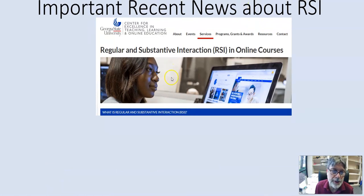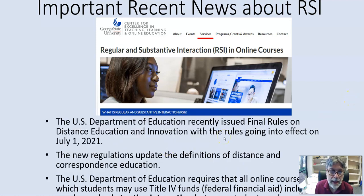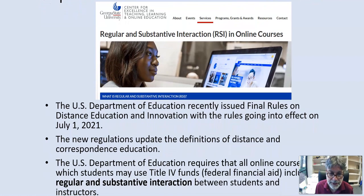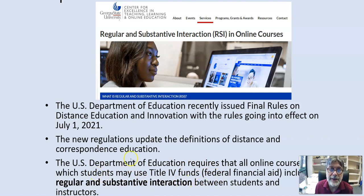What has happened more recently is what we should be concerned about. This is Georgia State University's policy they've just put up on RSI. The Department of Education has issued some final rules that define new definitions of what determines if you are having regular and substantive interaction. The U.S. Department of Education requires that all online courses for which students may use Title IV funds — federal financial aid — include regular and substantive interaction between students and instructors.